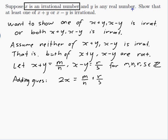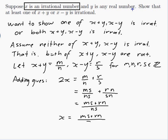Now, to add fractions, I have to put them over a common denominator. So that would be ms over ns. And then I multiply this one by n. rn over sn. ms plus rn over ns. And that would mean that x is equal to ms plus rn over 2ns.